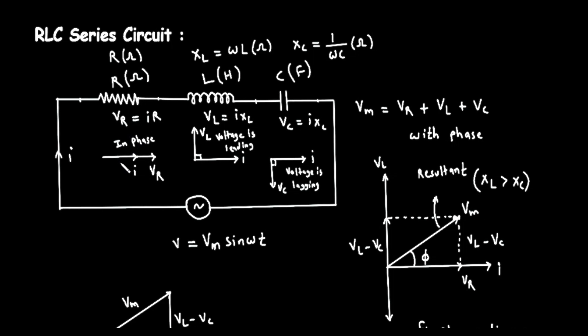Below this, you see the words in phase. This is a critical point. In an AC circuit, in phase means that the voltage across the resistor and the current flowing through it rise and fall at the exact same time. They are perfectly synchronized.